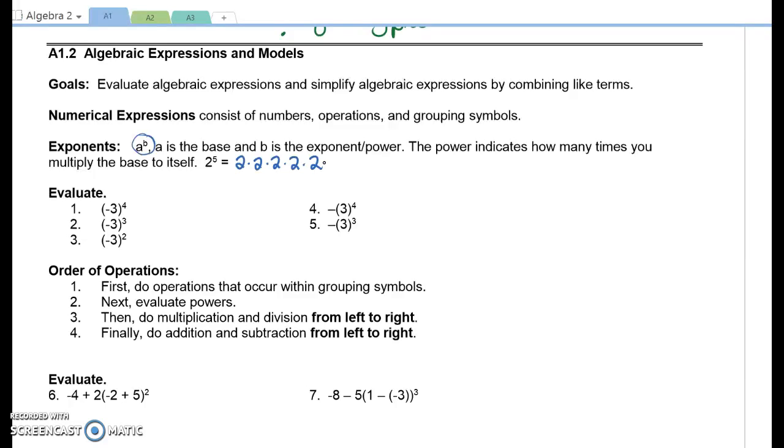If you have your calculator, go ahead and pull it out, because I want you to see how your calculator works, and how smart and how not smart your calculator can be. So number 1, negative 3 to the 4th. Put it in exactly as you see, parentheses, negative 3, close your parentheses, raised to the 4th. To raise it to the 4th, you're looking for the caret button. On the TI calculators, it looks like this. Some calculators have a button that says y to the x. That's the same button.